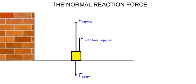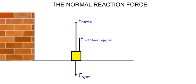As the normal force is a Newton's third law reaction force, it must be equal and opposite to the action force. So in this case, the crate pushes the ground downwards with a total of the additional applied force and the gravitational force, and therefore the ground must push the crate upwards with a normal force that is much bigger than the gravitational force.